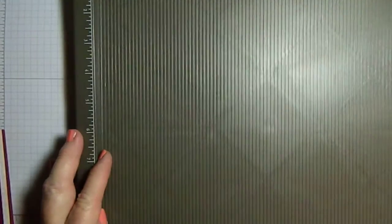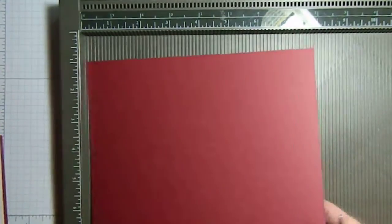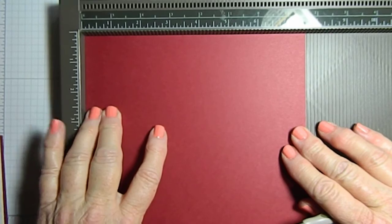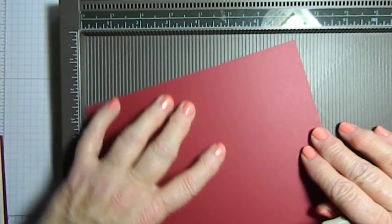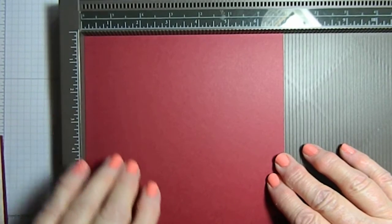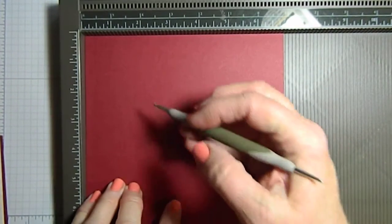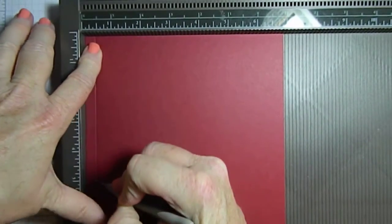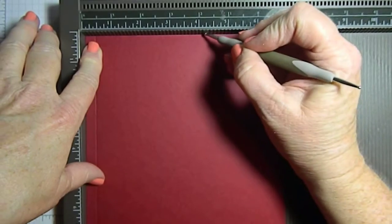Let's do some scoring. On the seven and three-fourths side, turn it to your seven inch side and score that at three-eighths and four and a quarter.